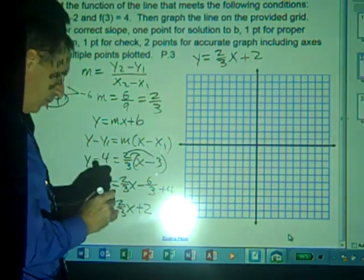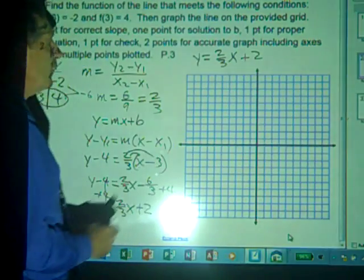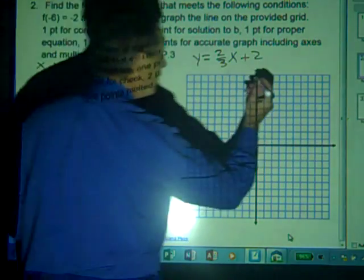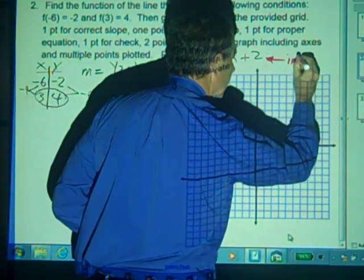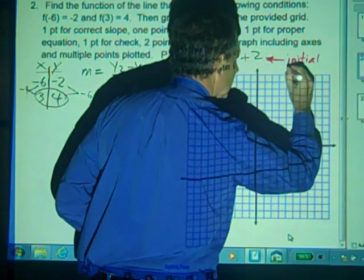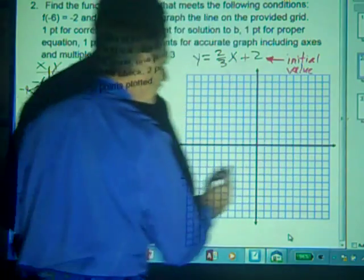Now we're going to take this equation and graph it. This value of 2 is the y-intercept, which we're going to call our initial value. In other words, the value of the function when x equals 0.